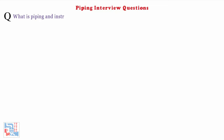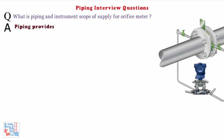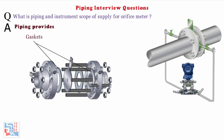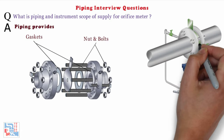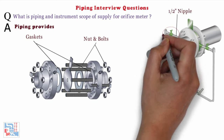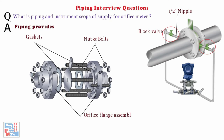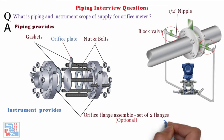What is the piping and instrument scope of supply for an orifice meter? Piping provides gaskets, nut bolts, and tappings from the orifice plate — most probably a half-inch nipple with two block valves — and orifice flange assembly (a set of two flanges, optional). Instrument provides the orifice plate along with the flange assembly and tubing connection downstream of block valves up to the DP transmitter.